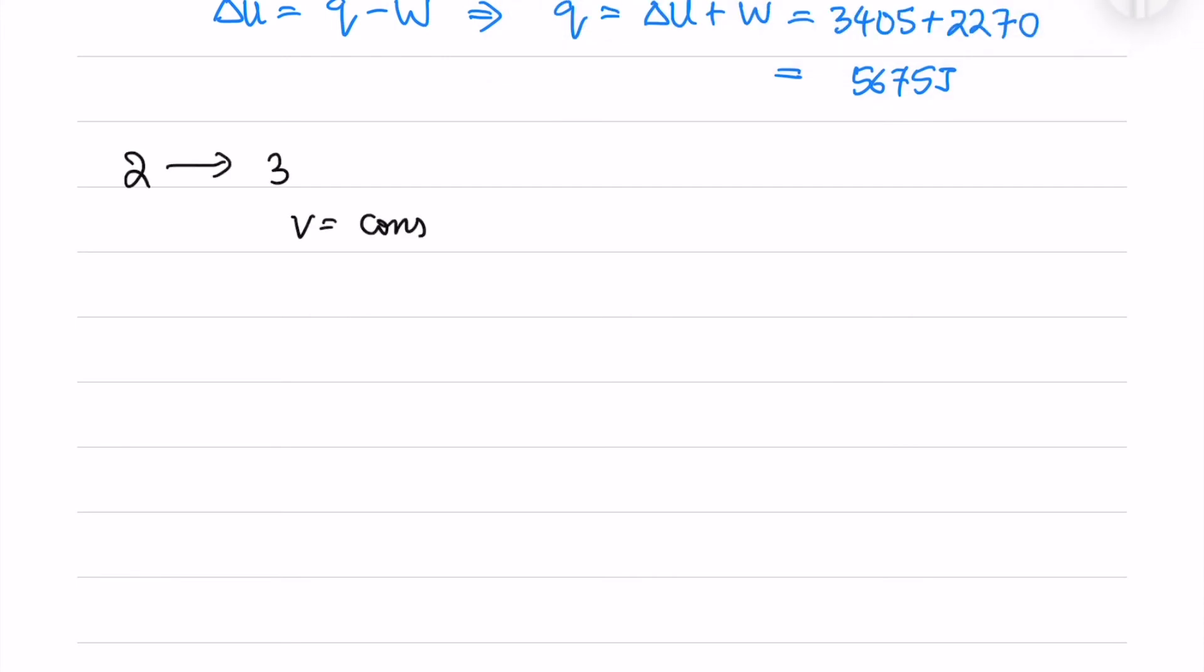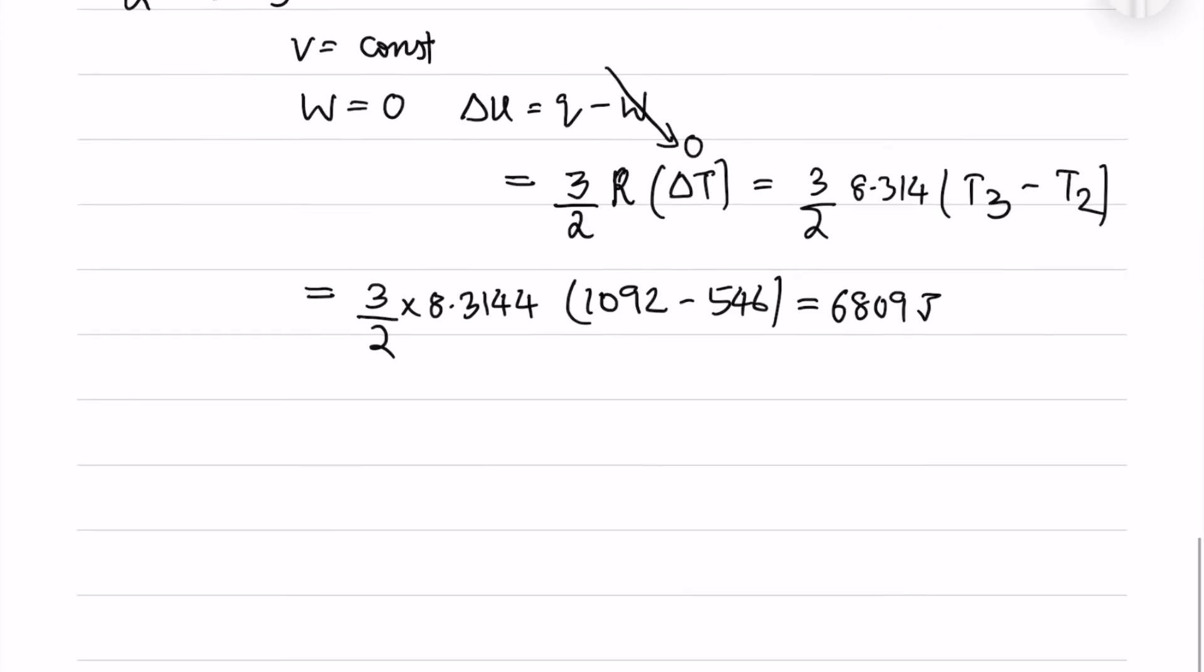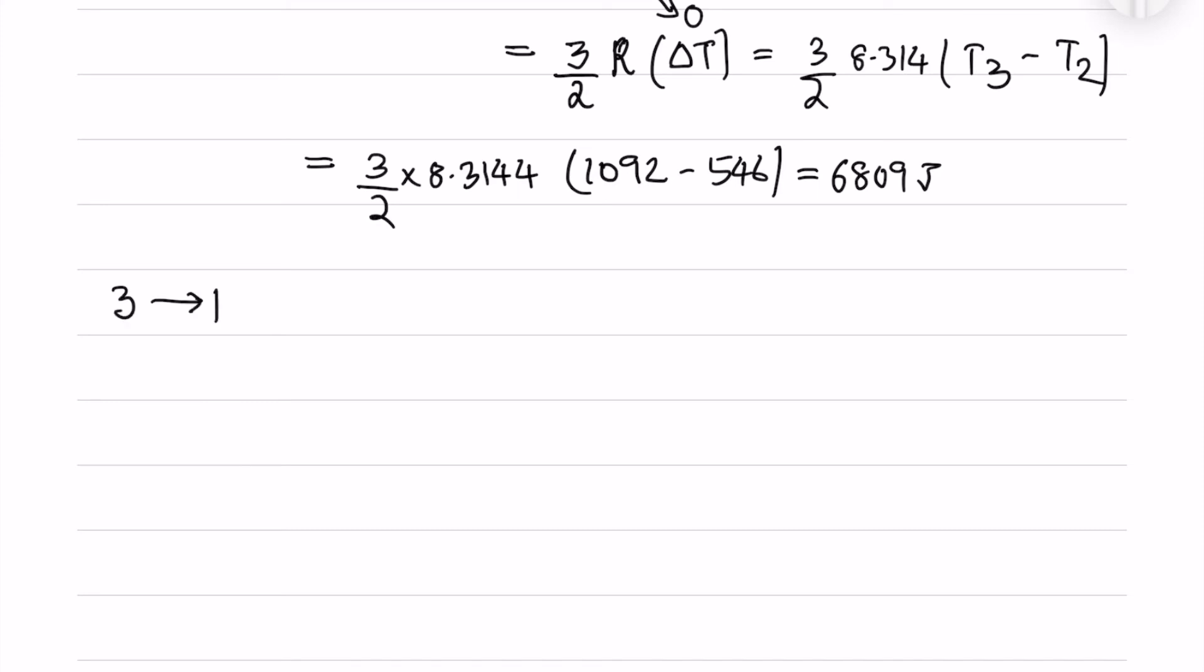For the second to third state we have volume is constant. So work done is 0. So from first law of thermodynamics we have delta U equals to Q. We will use the same relation N Cv delta T where Cv is 3 by 2 times R. And after substituting the values we get 6809 joules.